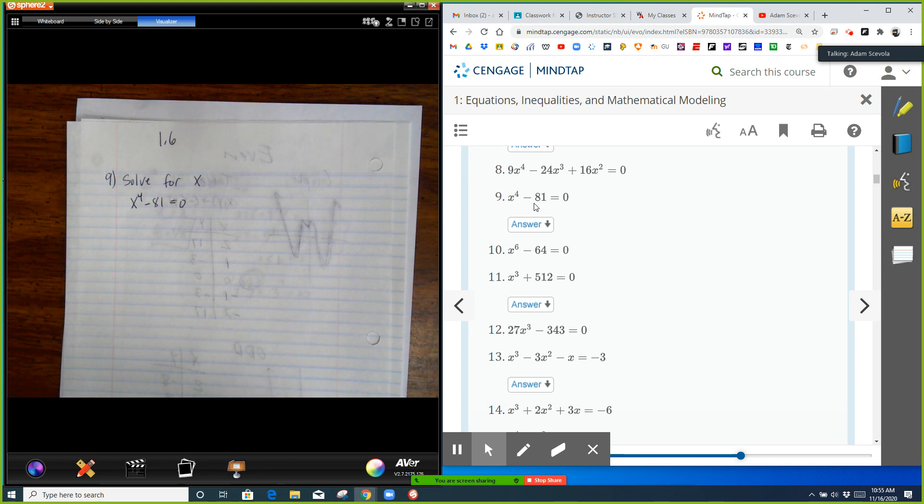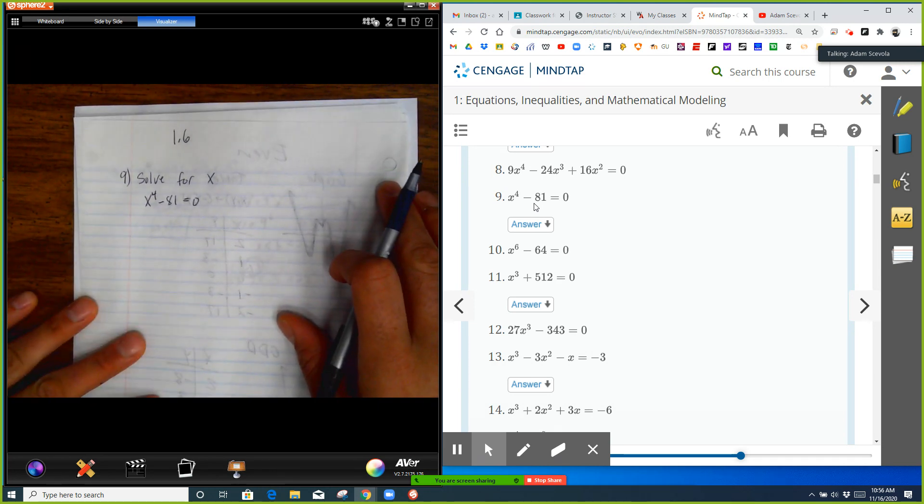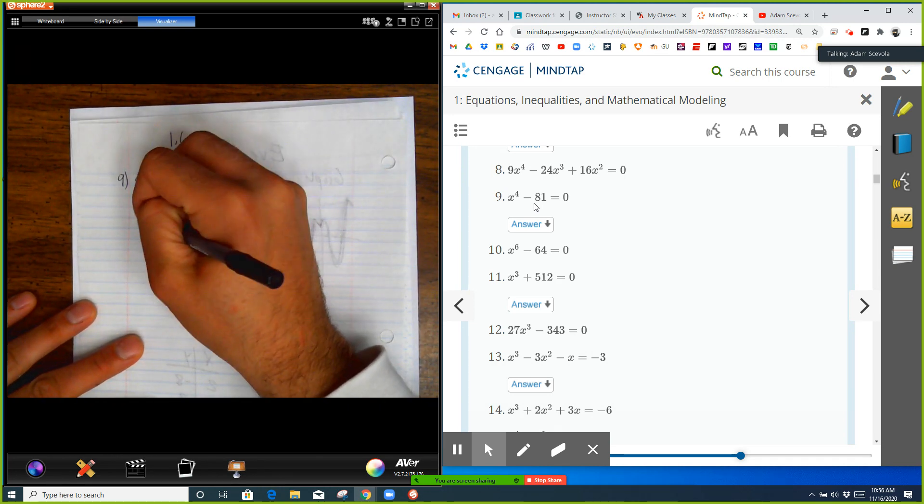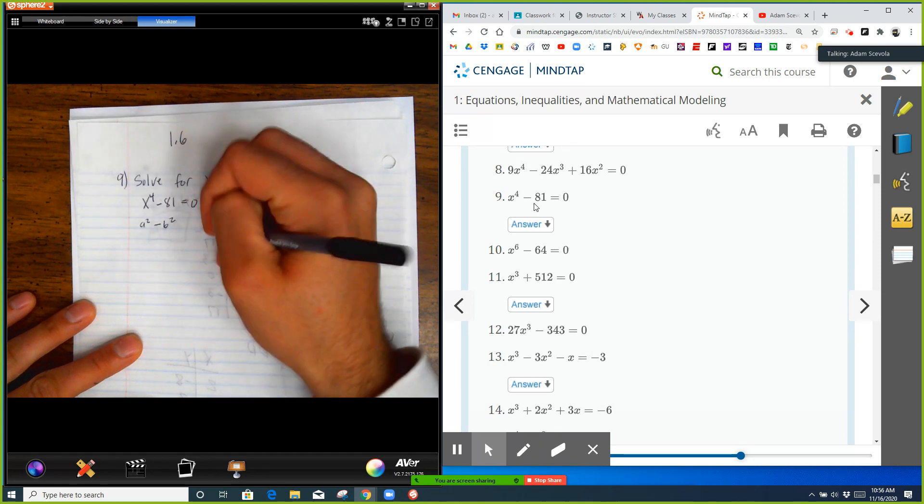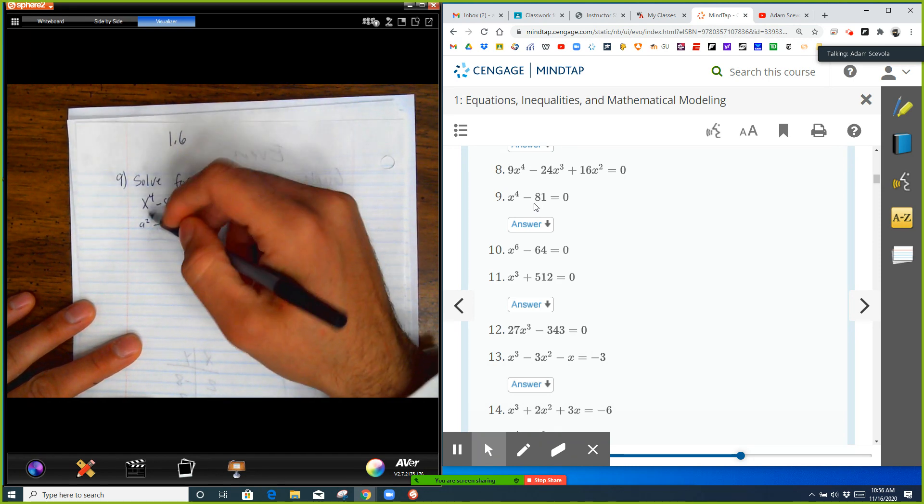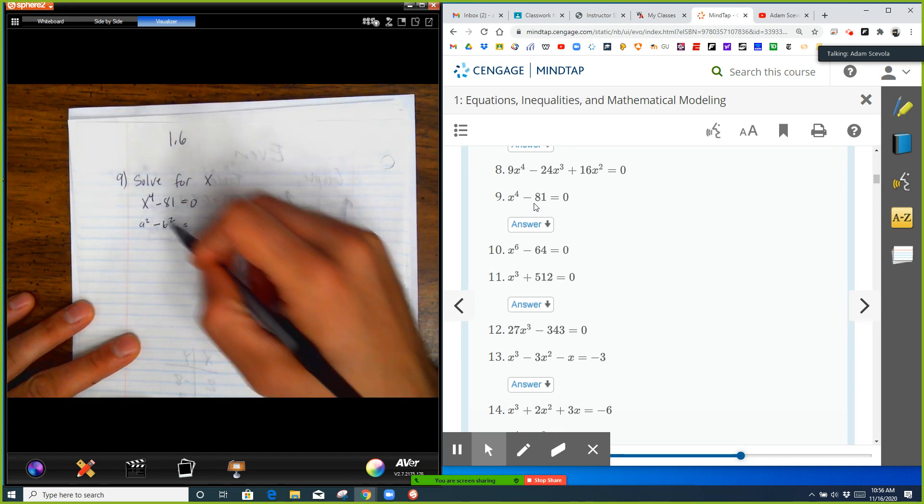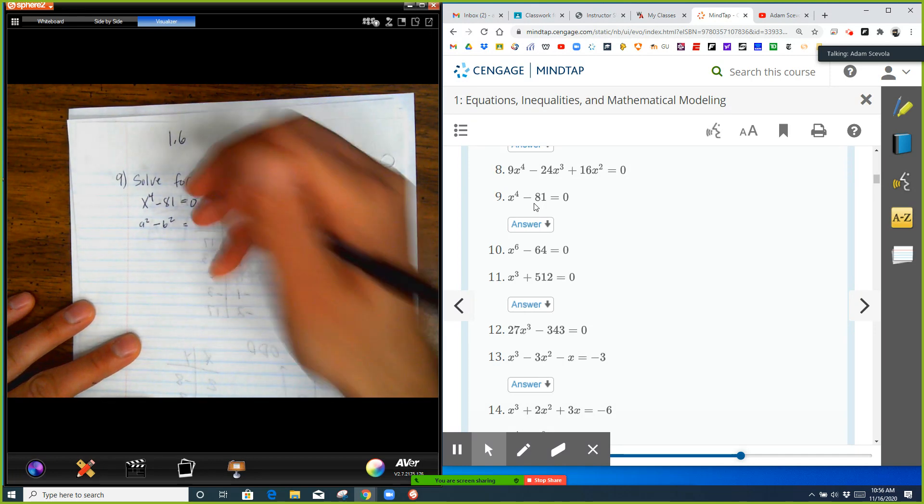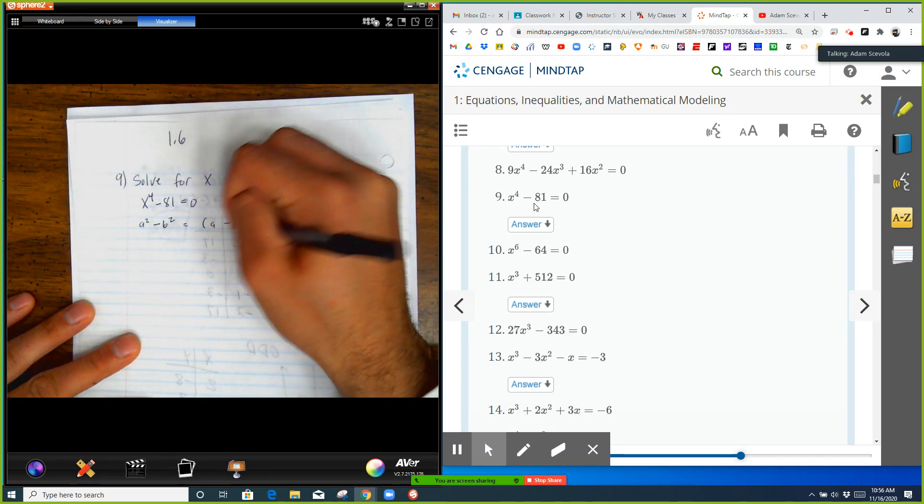Now, this is a difference of two squares. It's in the form a squared minus b squared, meaning x to the fourth is a perfect square and 81 is a perfect square. We know that we factor that by writing it as a sum and a difference multiplied by each other. So this could be written as x squared squared minus 9 squared.